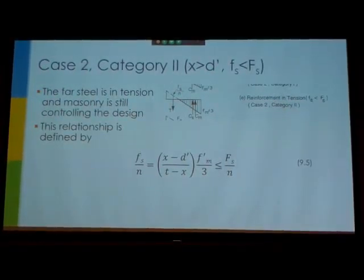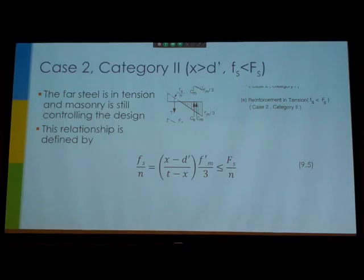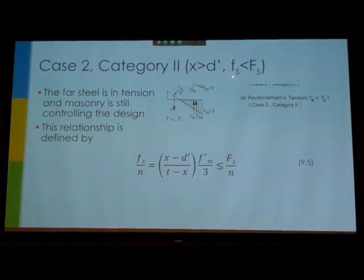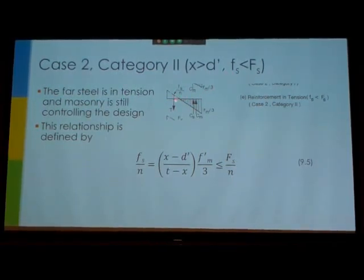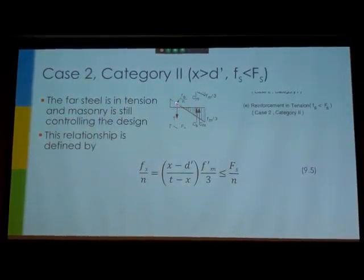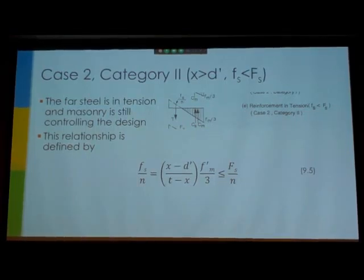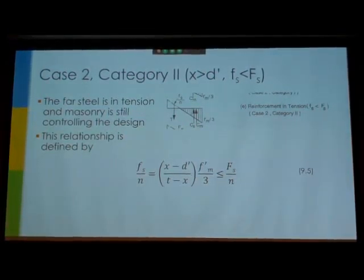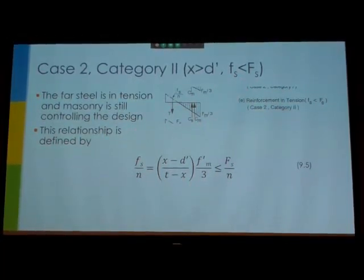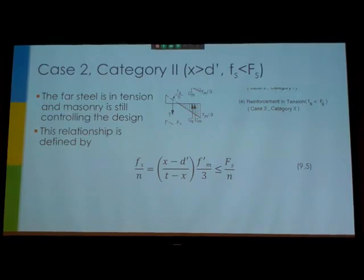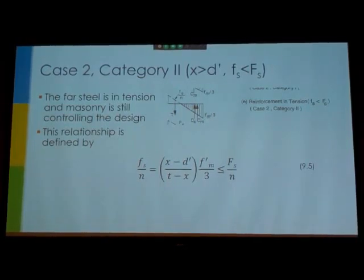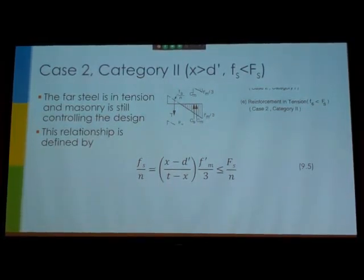Over here, now we're going to category 2, which means our first row of steel has actually gone into tension now. So x is now greater than d prime. However, we're assuming that the steel has not yet yielded. So that means the compression still controls the design, but we are getting some tensile strength from our steel here. Has it reached the allowable stress F_s? Yes. It's less than F_s, not yielded.